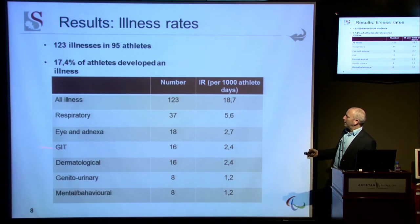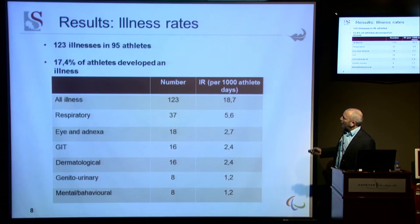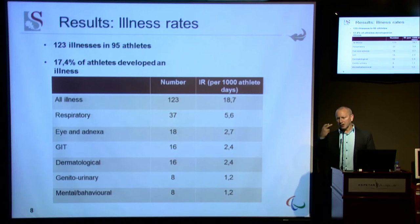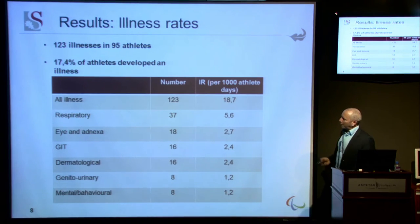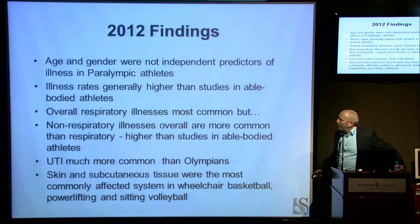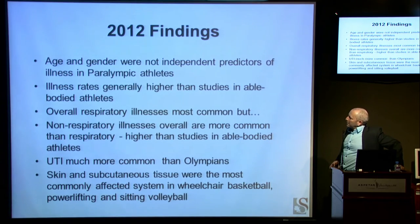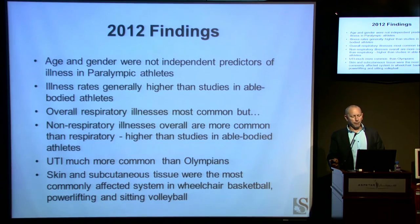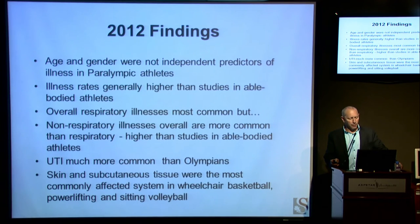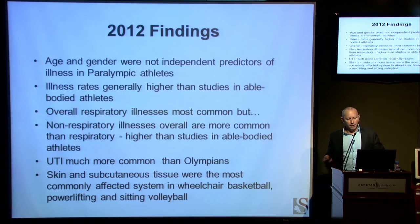For the Winter Paralympics, an interesting finding is that illnesses of the eye and adnexa were quite high at 2.7 per thousand athlete days — the eye takes strain in the winter sport setting, so we need protection and prevention programs for those conditions. Our 2012 findings show that age and gender were not independent predictors of illness in Paralympic athletes, illness rates are higher than in able-bodied studies, respiratory illnesses are the most common, but non-respiratory illnesses are more prevalent. Urinary tract infections are more common than in Olympians, and skin and subcutaneous tissue issues are particularly prevalent in sitting athletes — wheelchair basketball, powerlifting, and sitting volleyball.